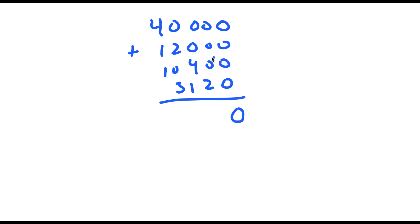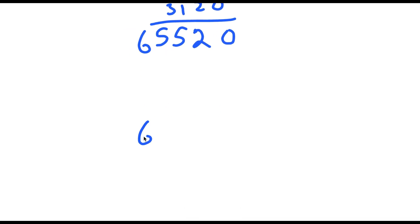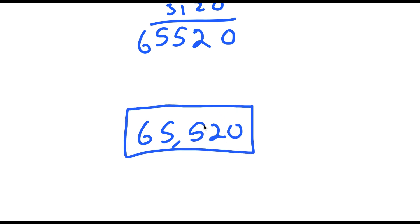Now adding these all up: 0 plus 0 plus 0 plus 2 is 2; 0 plus 0 plus 4 plus 1 is 5; 2 plus 3 is 5; and 4 plus 1 plus 1 is 6. So I get 65,520 as my solution for this expression.